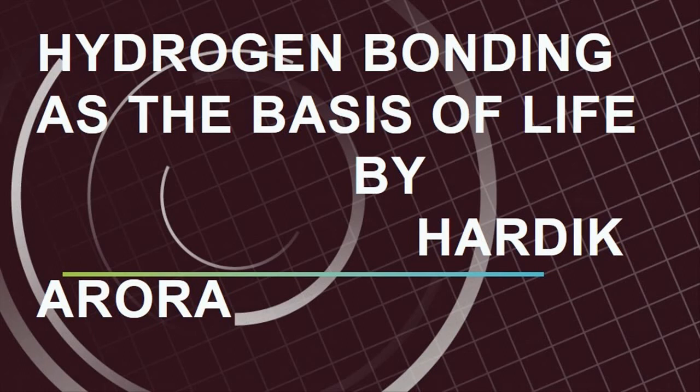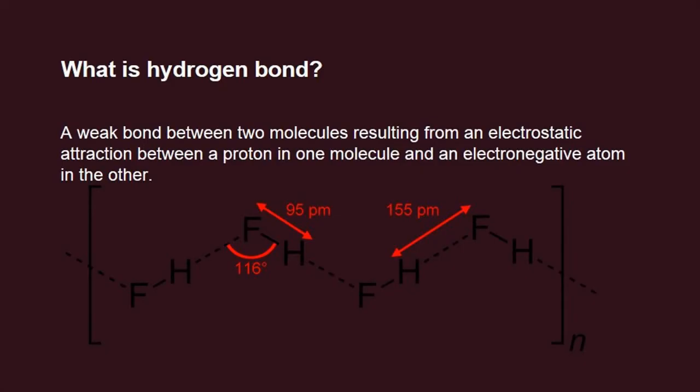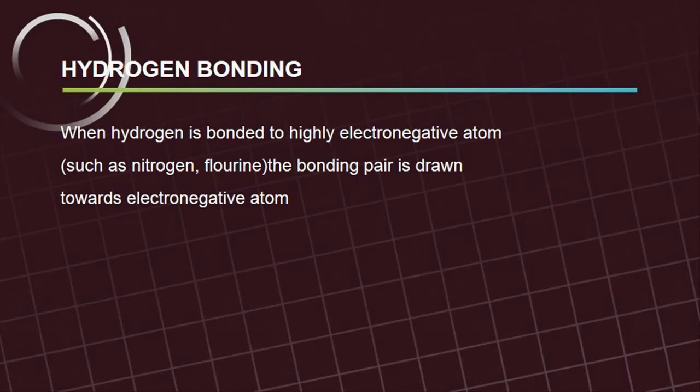Hydrogen bonding as the basis of life, by Hartig Aurora. What is a hydrogen bond? A weak bond between two molecules resulting from an electrostatic attraction between the proton in one molecule and an electronegative atom in the other.